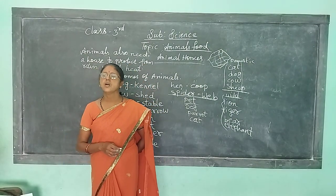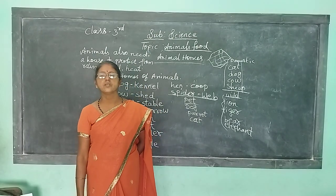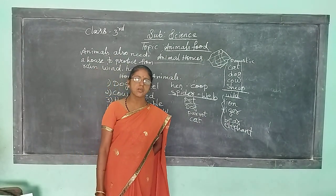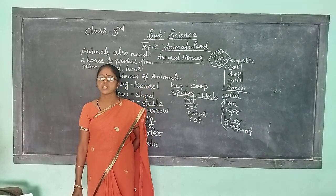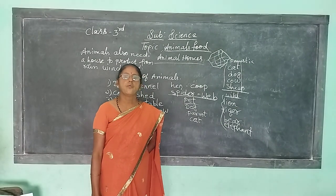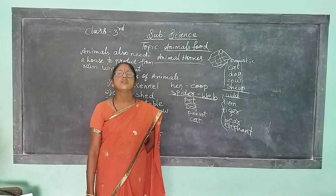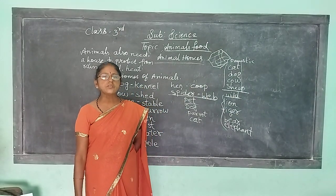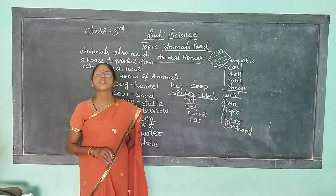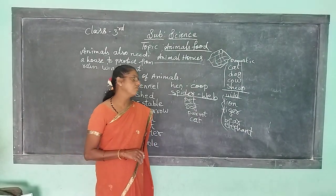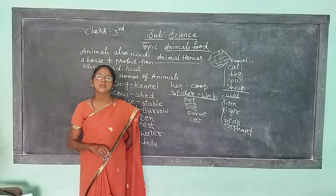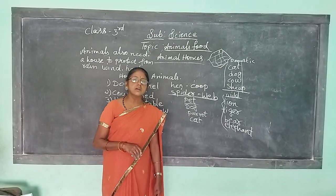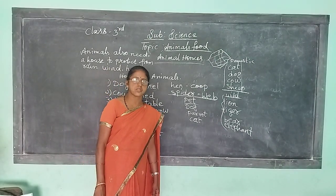Animals that eat only plants, grass, and leaves are called herbivorous animals. Animals that eat flesh of other animals are called carnivorous animals. Animals that eat both plants and flesh of other animals are called omnivorous animals.